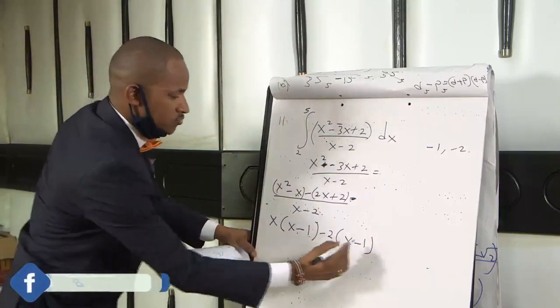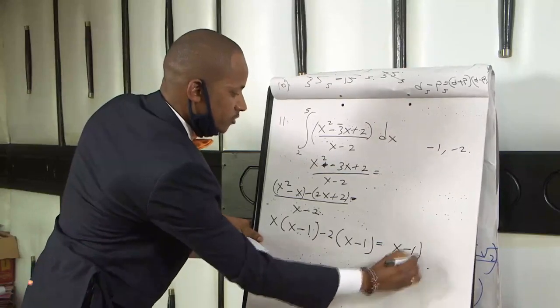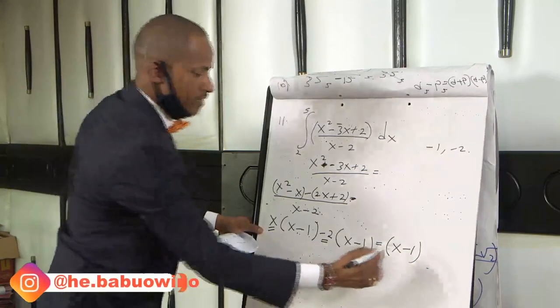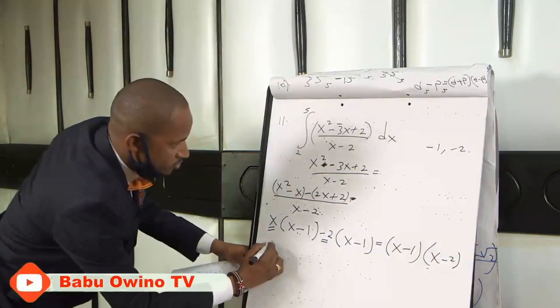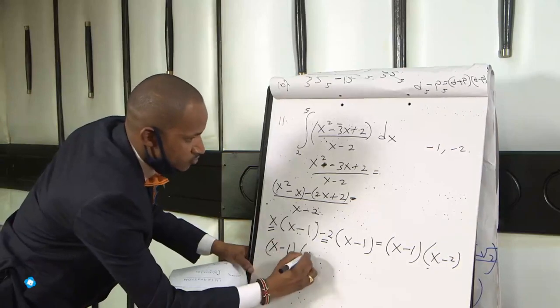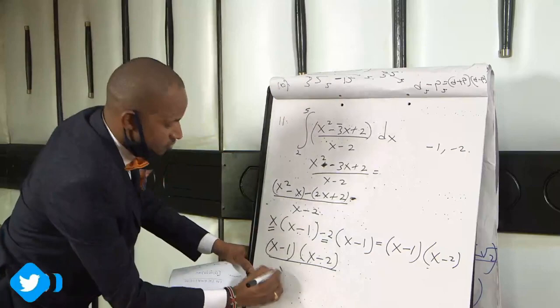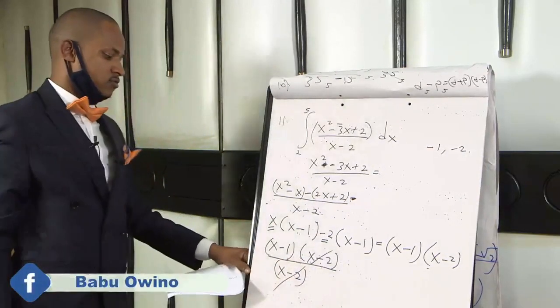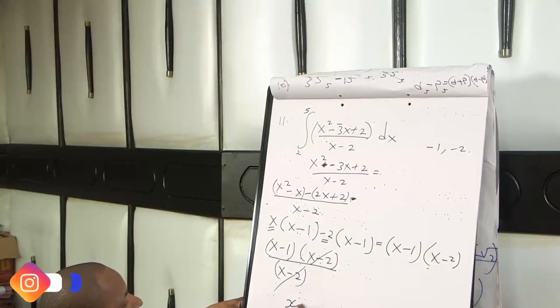What is common to these two? It's x minus 1. You collect this x and minus 2 together also, x minus 2. So we have our equation simplified as x minus 1 times x minus 2 divided by x minus 2. So this x minus 2 cancels. So the equation that we have simplified is x minus 1.